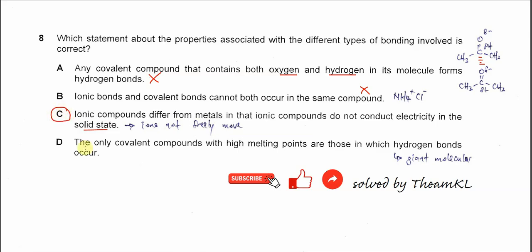So why D is wrong. The only covalent compounds with high melting points are those in which hydrogen bonds occur. No. There are those compounds like diamond and silicon oxide which have a giant molecular structure with covalent bonds. So this one is also not correct.